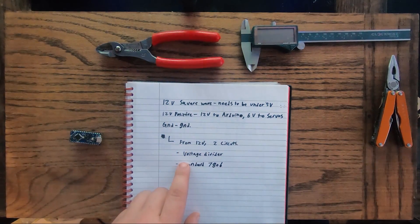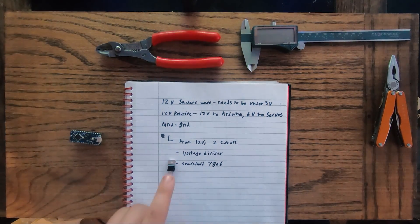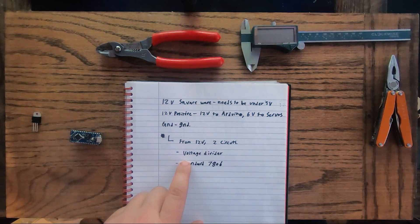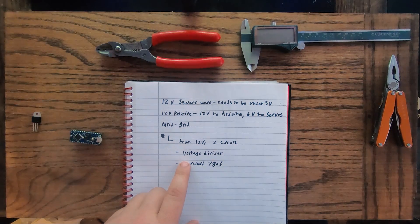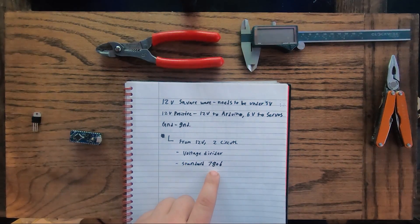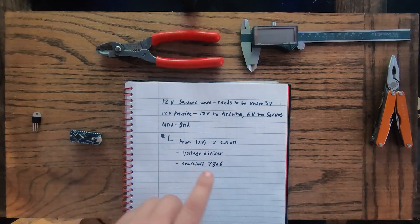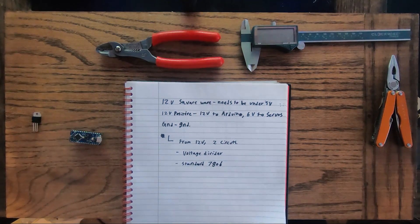So I'm gonna run two circuits off of that: a standard 7806 transistor and a voltage divider using two resistors. The reason I'm doing that is how a transistor works, it just can't handle the frequency very well of that coming in. It can't switch back and forth fast enough to handle it.